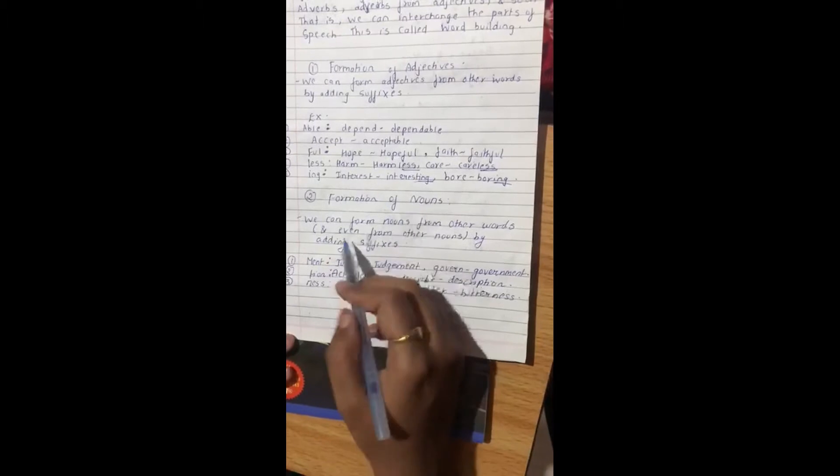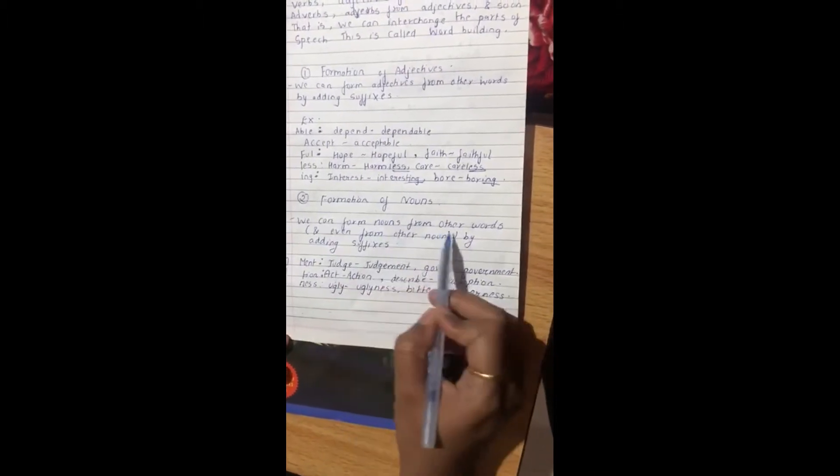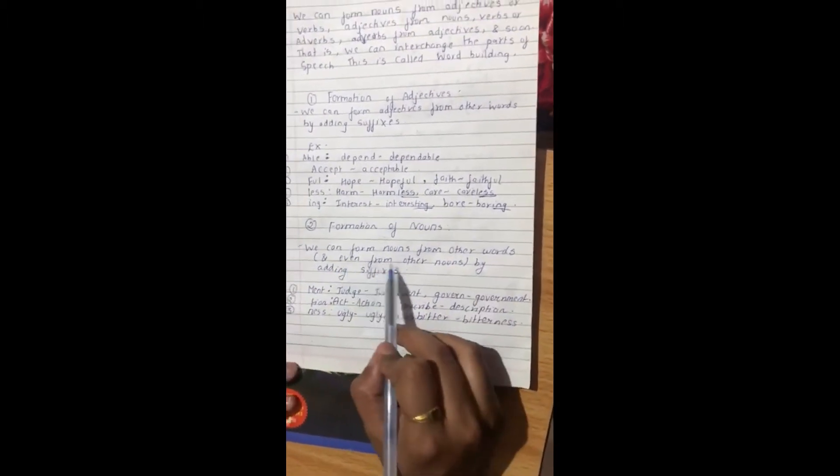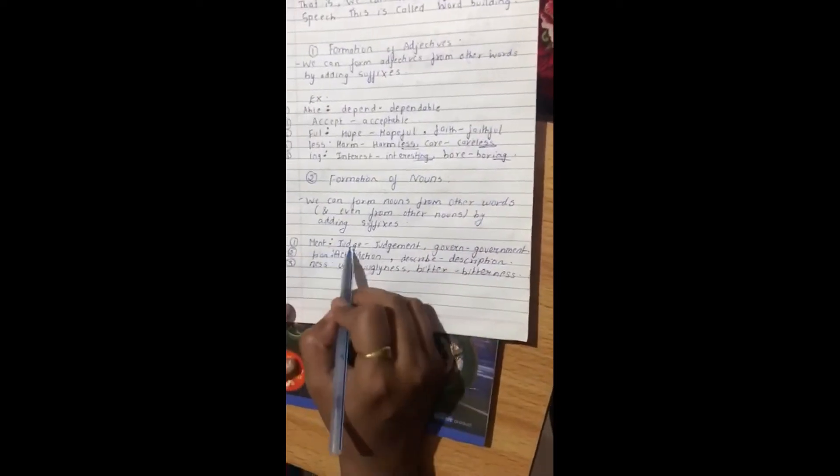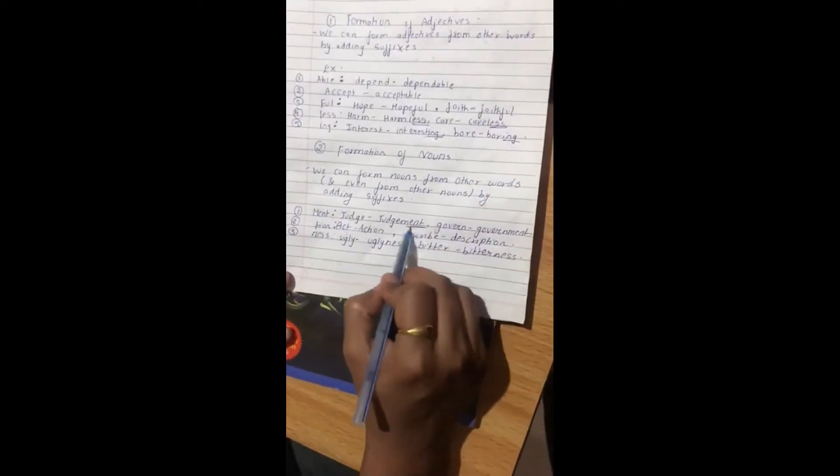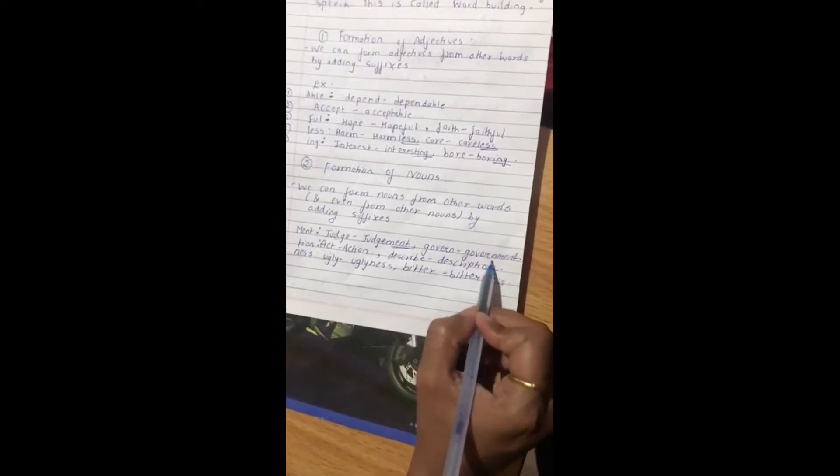Second, formation of nouns. We can form nouns from other words and even from other nouns by adding suffixes. -ment: judgment, government.